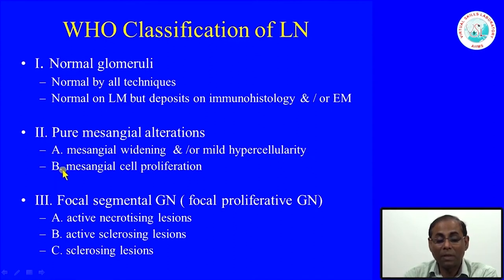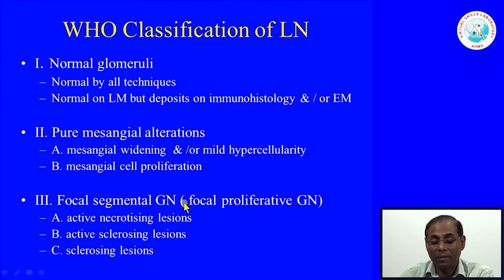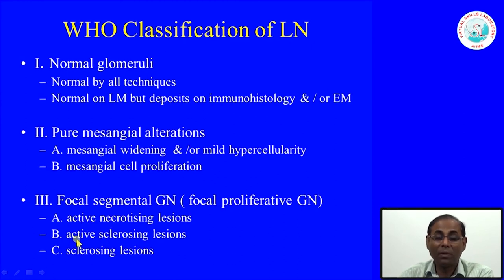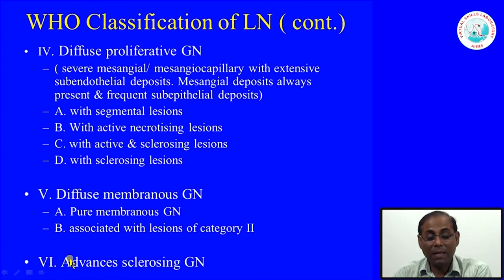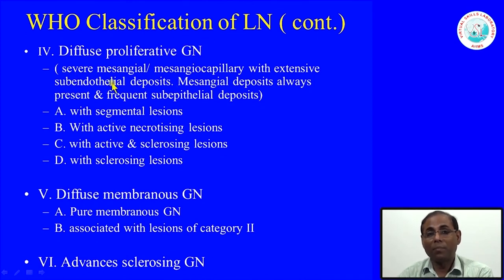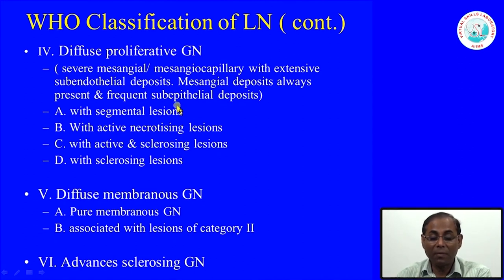Class 3 is focal segmental lupus nephritis — mesangial proliferative lupus nephritis — with active necrotizing lesions, active sclerosing lesions, or only sclerosing lesions, classified as subtypes A, B, or C. Class 4 is diffuse proliferative lupus nephritis, showing diffuse endocapillary cell proliferation similar to post-infective glomerulonephritis, and may be associated with segmental lesions, active necrotizing lesions, active and sclerosing lesions, or diffuse sclerosing lesions, classified as subtypes A through D.